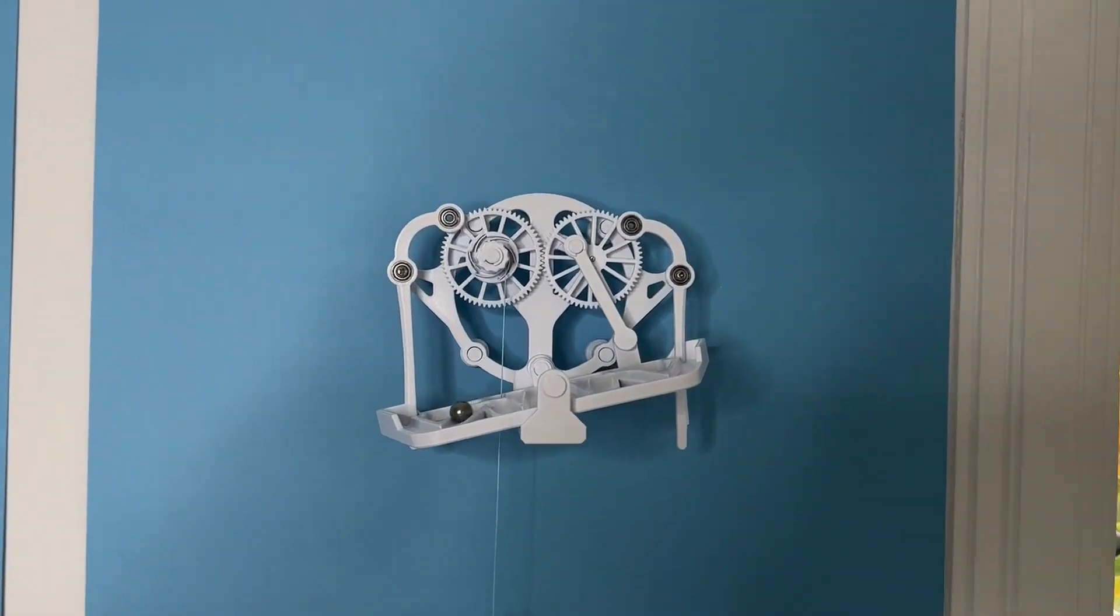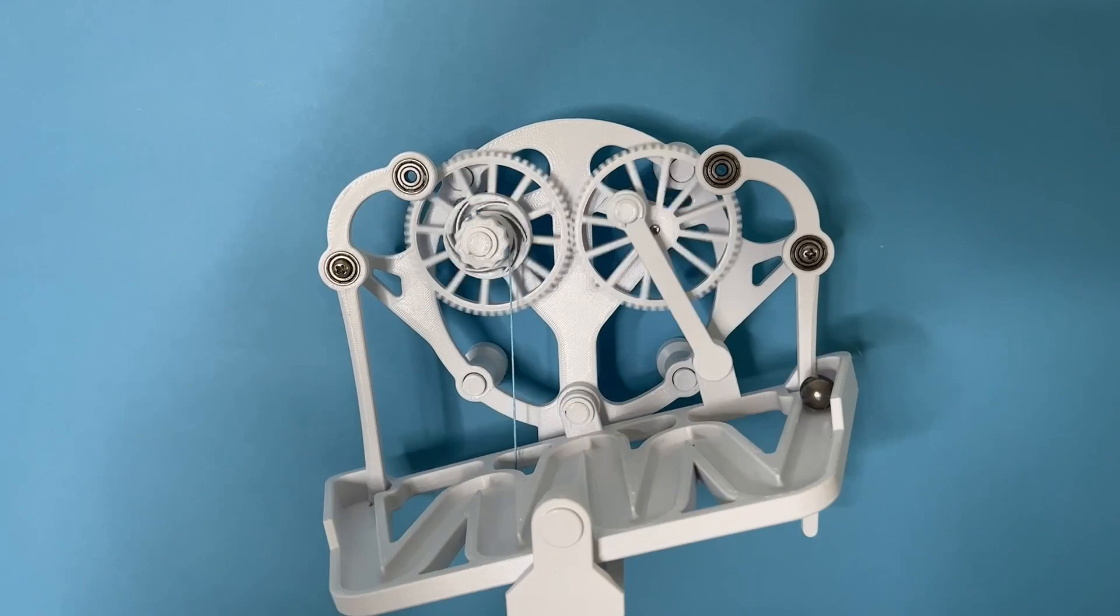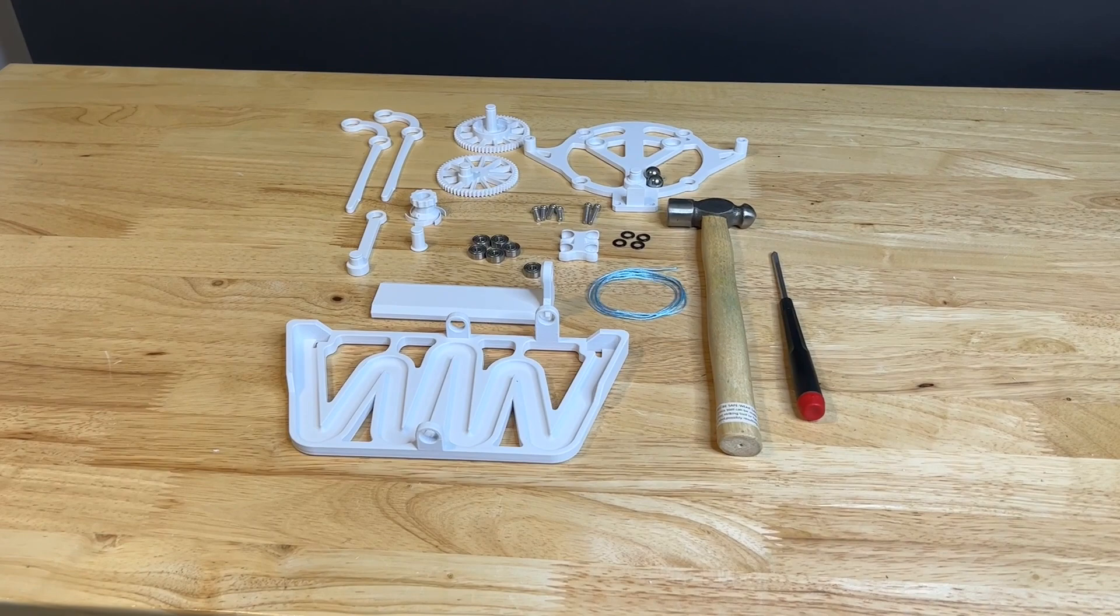In this video I'm going to be showing you how to assemble the rolling ball escapement, which is one of my favorite escapements out of all of them. If you haven't yet, you can purchase the files from jbbcreative.com, get the files printed, and you'll find a complete parts list in the files.